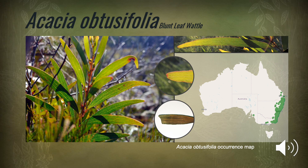Acacia obtusifolia is a shrub or tree with an upright to spreading form. It grows between 1 and 20 metres in height and occurs in woodlands and granite ranges from eastern Victoria, through eastern New South Wales, and into southeastern Queensland. The botanical name is derived from the obtuse angle of the phylode apex, which is between 90 and 180 degrees. The common name, blunt-leaf wattle, refers to the broken or blunt tip often found on phylodes, possibly the result of insect grazing.